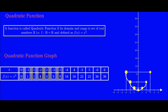Now for the value of x equal to minus 4, f(x) would be 16. And you can easily guess that if the value of x is positive 4, f(x) would again be 16. You can see that simultaneously the graph is also being drawn.